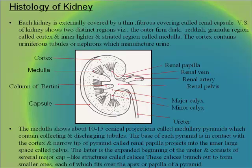Each kidney is externally covered by a thin fibrous covering called the renal capsule. The cross-section shows two distinct regions: the outer firm dark reddish granular cortex, which contains uriniferous tubules or nephrons that manufacture urine, and the inner lighter striated medulla, which shows about 10 to 15 conical medullary pyramids. The base of each pyramid contacts the cortex, and the narrow tip called the renal papilla projects into the inner space called the pelvis — the expanded beginning of the ureter, consisting of several calyces.